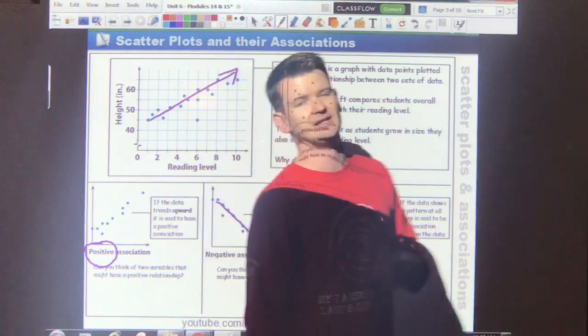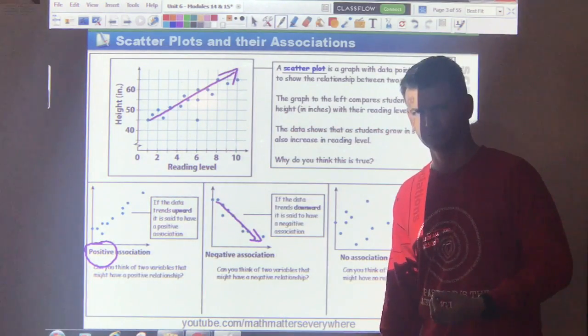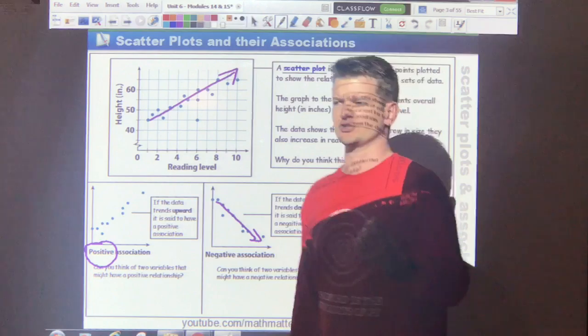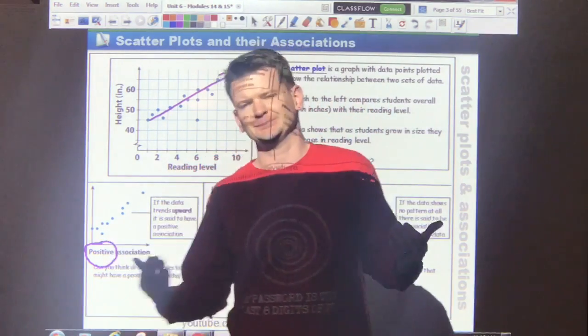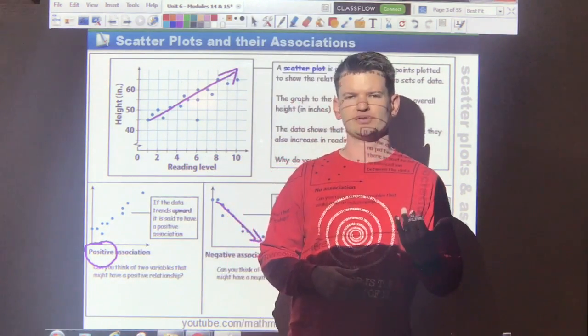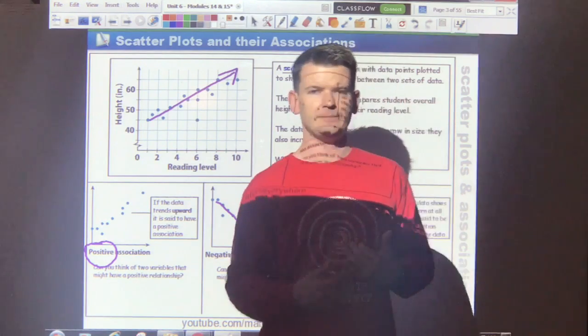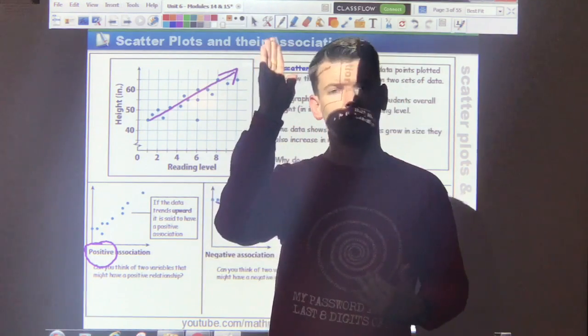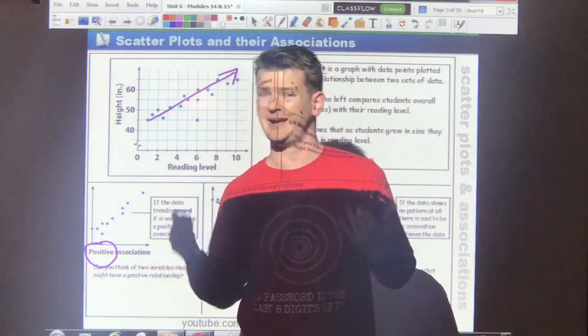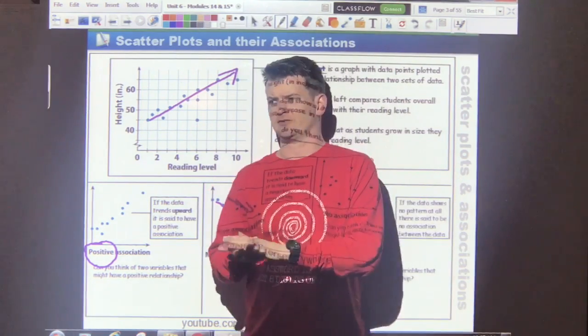Overall the data is trending downward. Two items that may have a negative association will be something like maybe temperature and the number of snowboards that you sell. If the temperature is going up, the number of snowboards you sell is going to go down. What else could have a negative association?